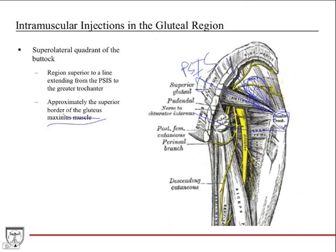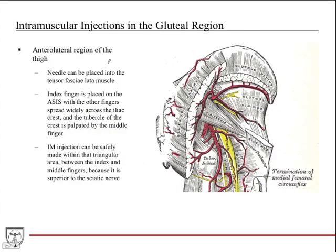If you're up in the superior and lateral region, there's no way you're going to hit the sciatic nerve. For the anterior lateral region of the thigh, the needle can be placed in the tensor fasciae latae muscle, which comes down from the ASIS — anterior superior iliac spine. You palpate the ASIS with your index finger, widely spread your fingers, and extend your middle finger across to palpate the iliac crest. The area between your index finger and middle finger is where you can safely put the injection in.